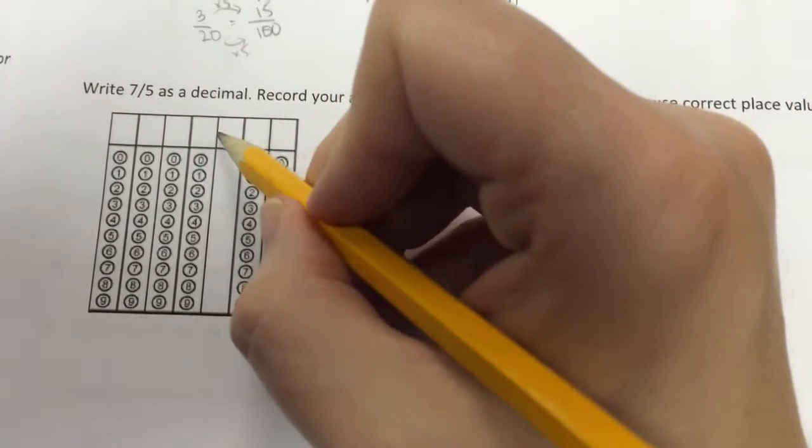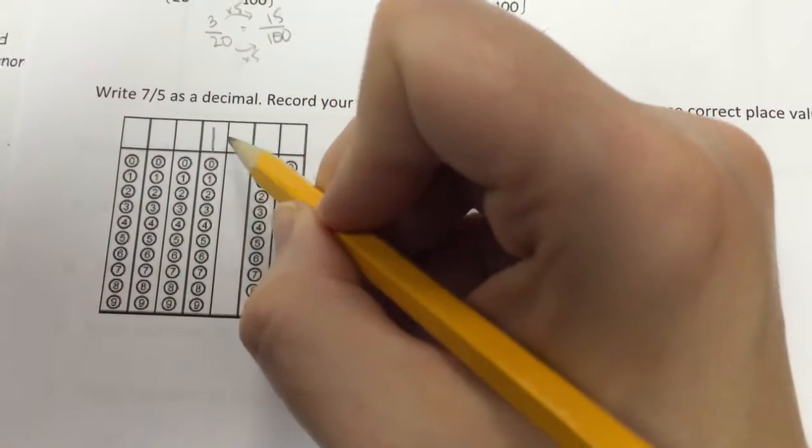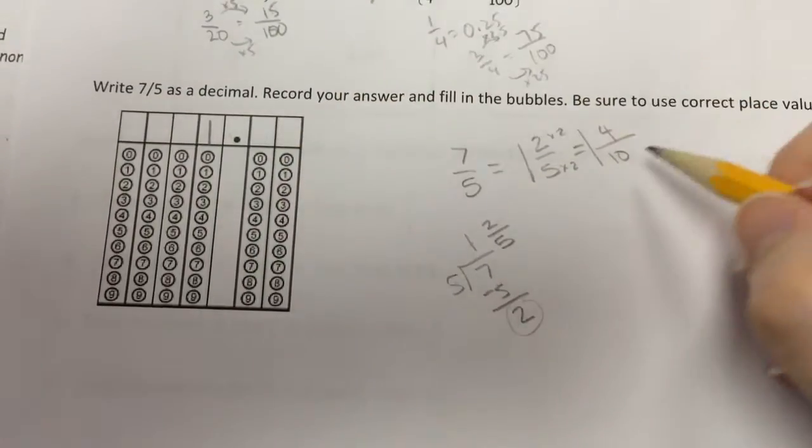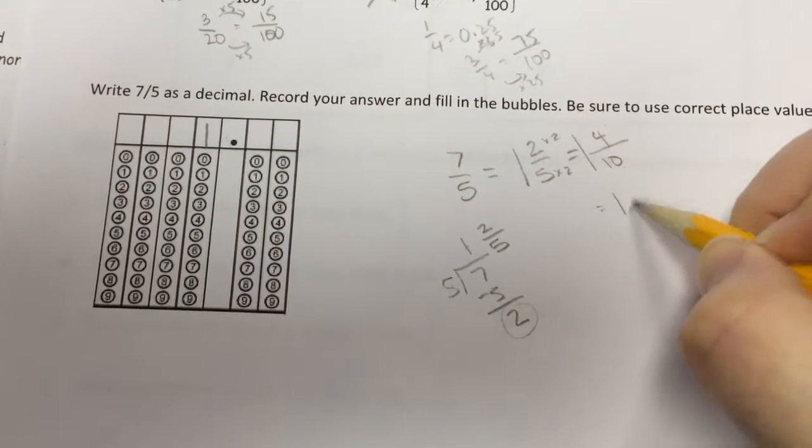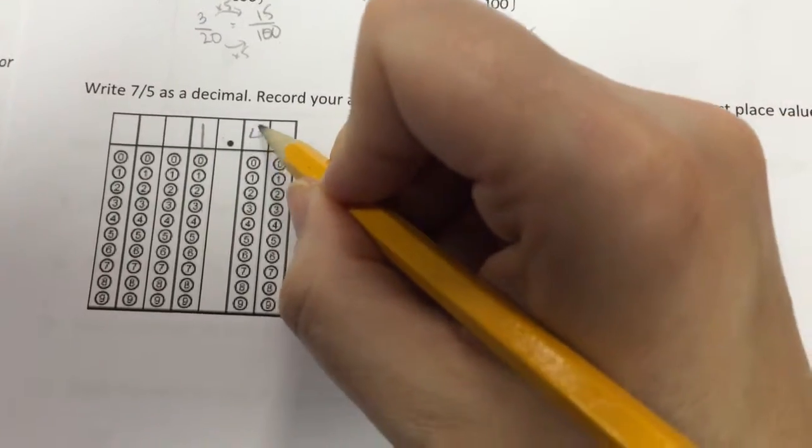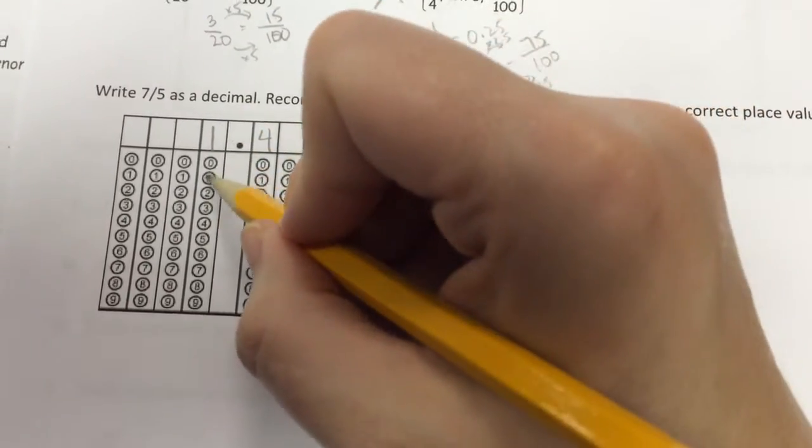So one is my whole number. That comes before my decimal, because that's a whole number. One and four-tenths. Four-tenths is right behind the decimal. So four-tenths comes right here. And I have to make sure I bubble in,